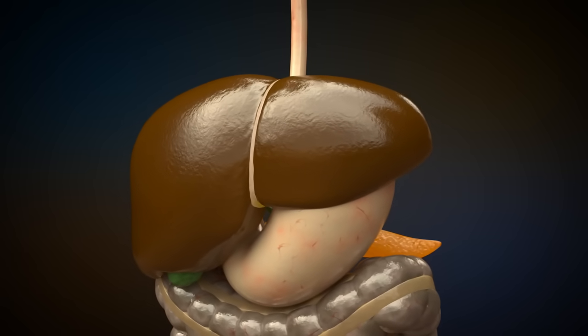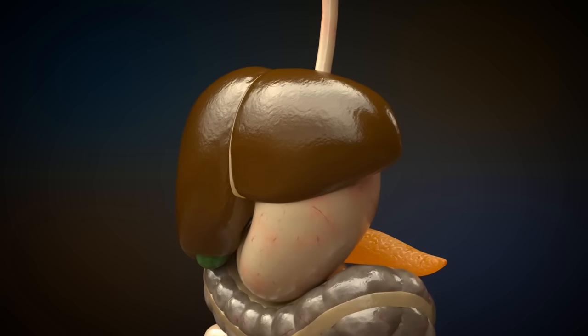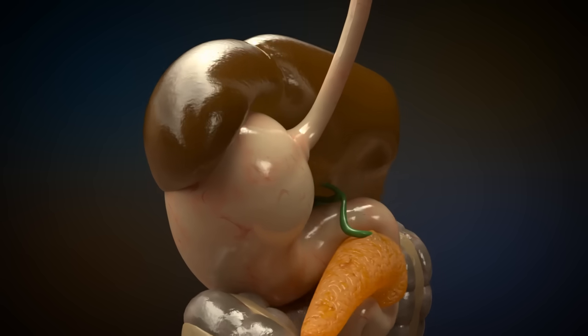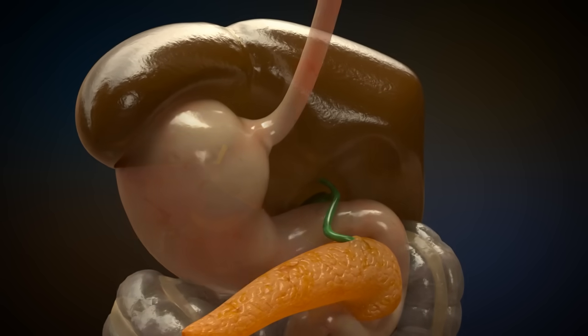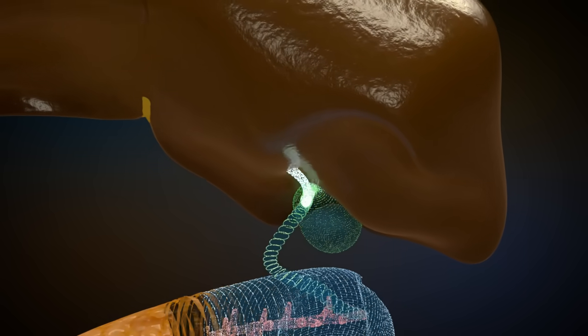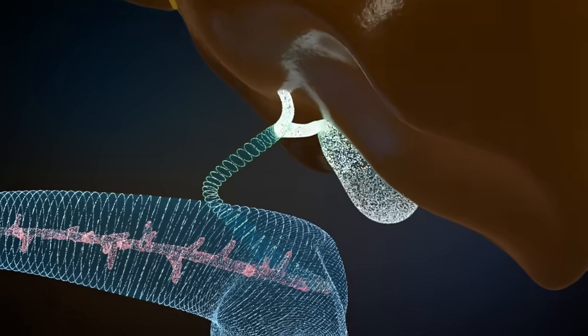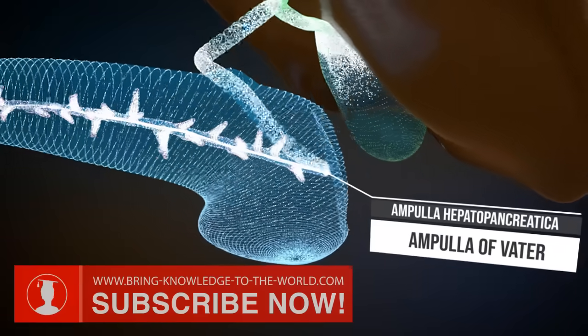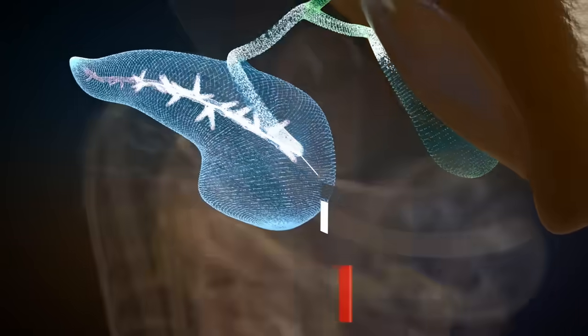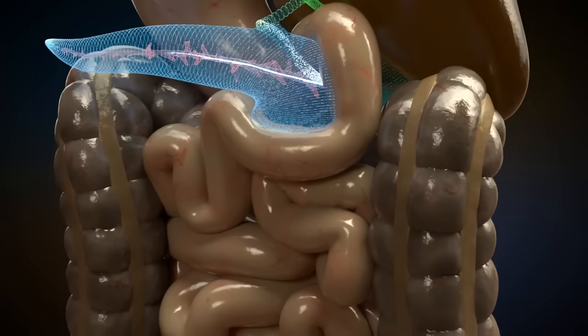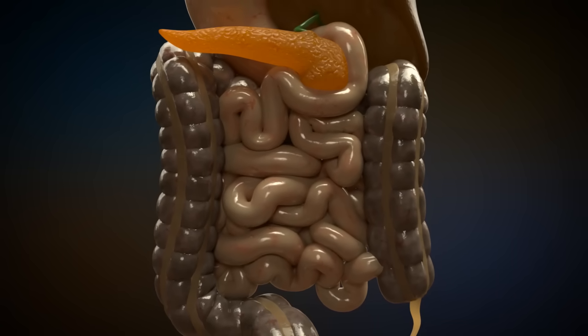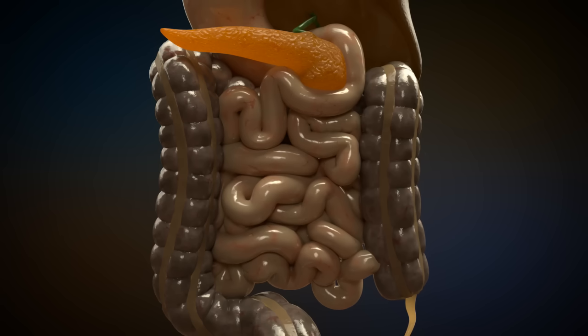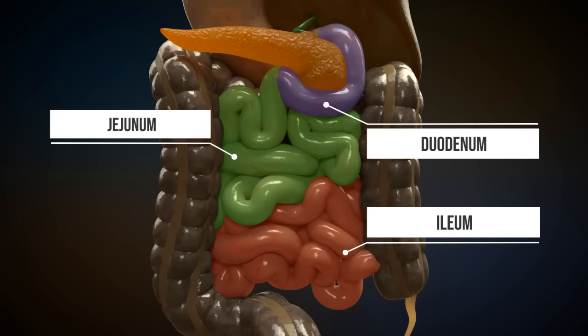Bile is produced by the liver cells and transported to the gallbladder. The bile is stored in the gallbladder and finally added to the food in the duodenum via the ampulla of Vater. The pancreas also releases juice via the ampulla of Vater. The small intestine consists of three sections: duodenum, jejunum, and ileum. The ileum continues into the large intestine in the right lower abdomen.